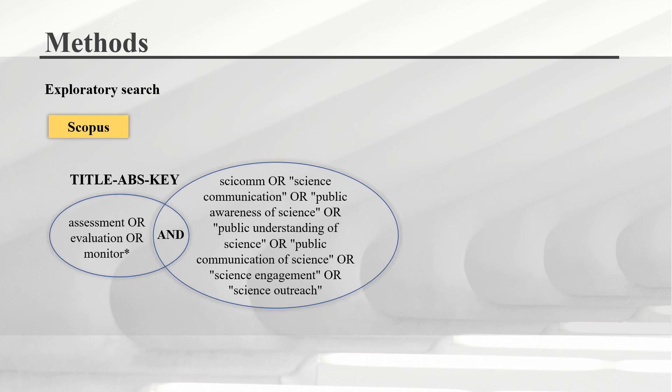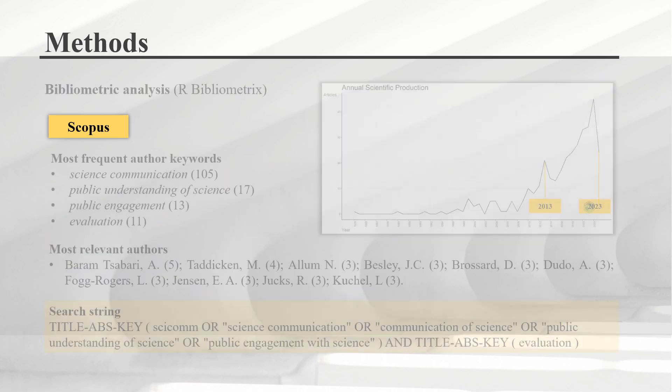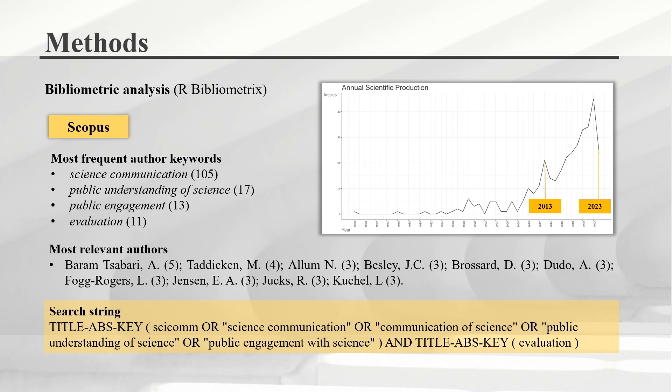To answer this question, we conducted in July 2023 an exploratory search in Scopus database combining search terms related to evaluation and science communication. We've only searched for articles, reviews and conferences since these are the only document types that have complete metadata for conducting a bibliometric analysis. The restriction to the English language was necessary for controlling the vocabulary. We've obtained 833 results from this search.